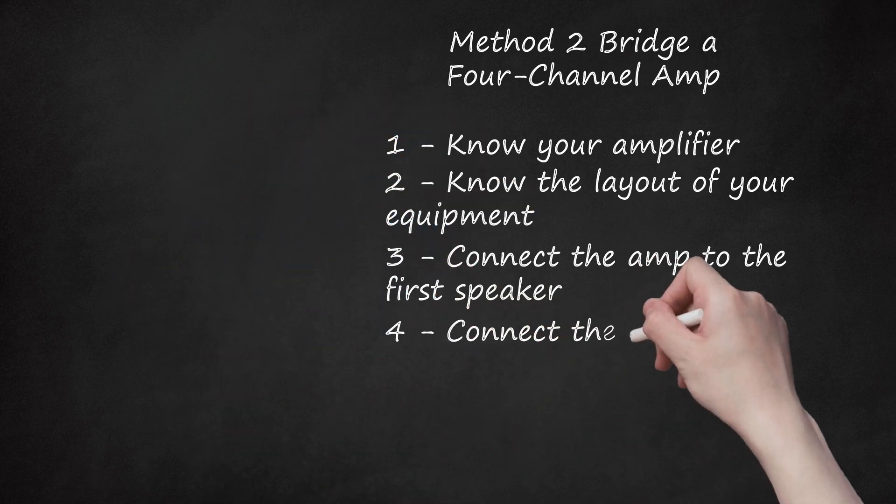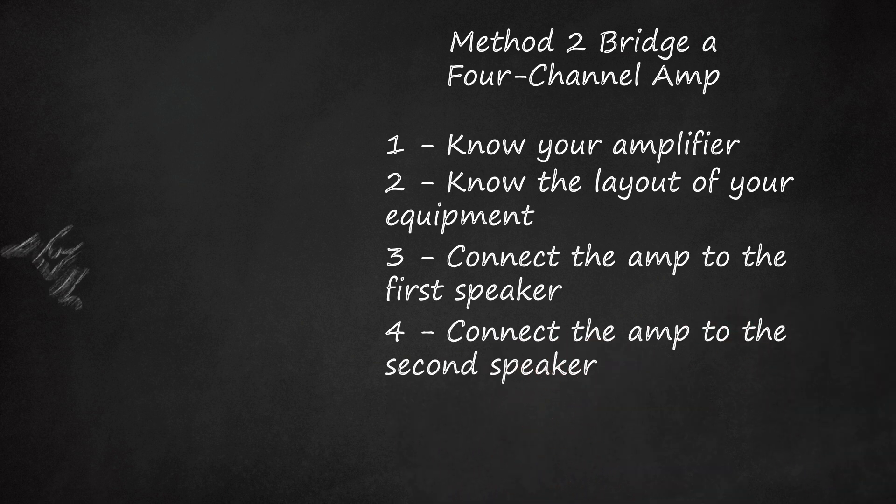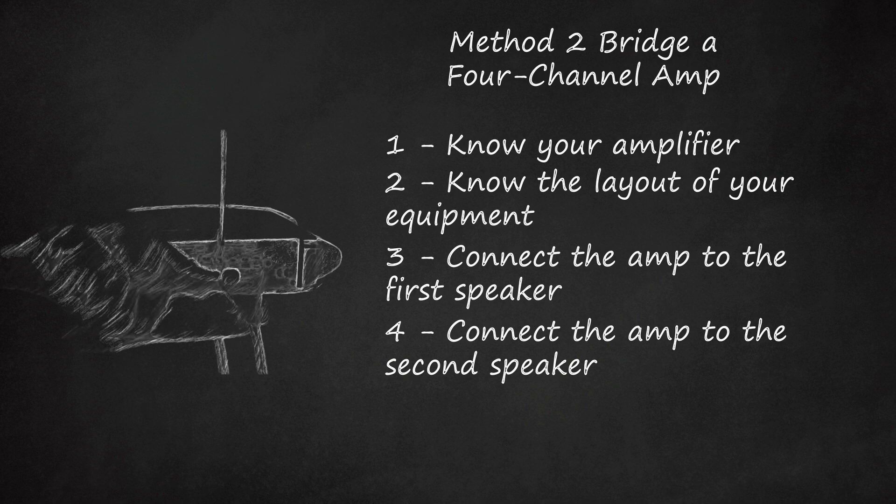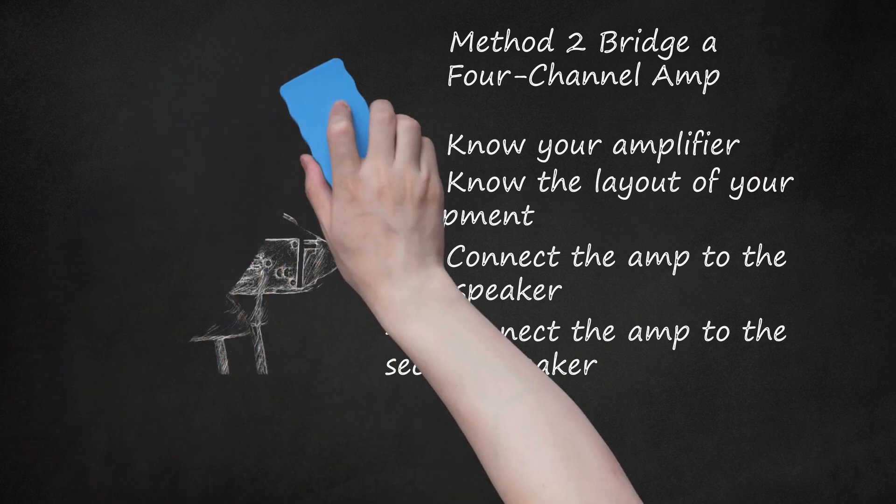Step 4: Connect the amp to the second speaker. Following the previous method, again take the wires coming from the second speaker, but this time, connect the positive speaker lead to terminal E, the positive for channel 3, and connect the negative speaker lead to terminal H, the negative for channel 4.